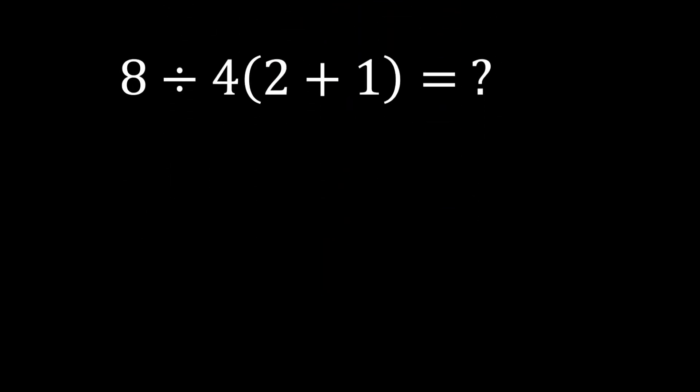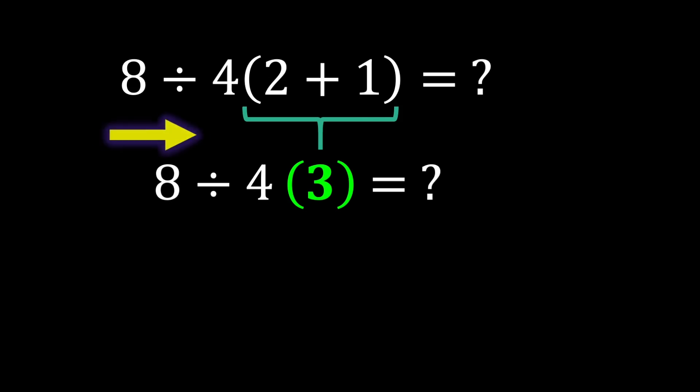8 divided by 4 multiplied by 2 plus 1. According to PEMDAS, we first calculate inside the parentheses. 2 plus 1 gives us 3, and the expression becomes 8 divided by 4 multiplied by 3. Since multiplication and division have the same priority, we move from left to right, performing whichever comes first.